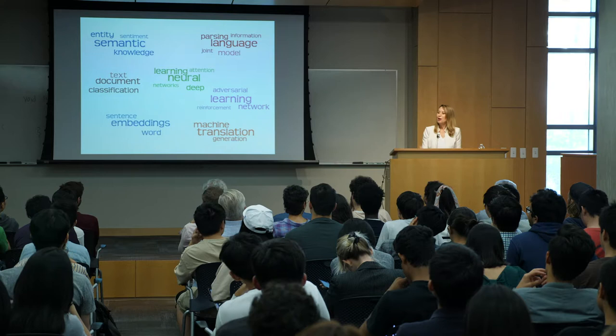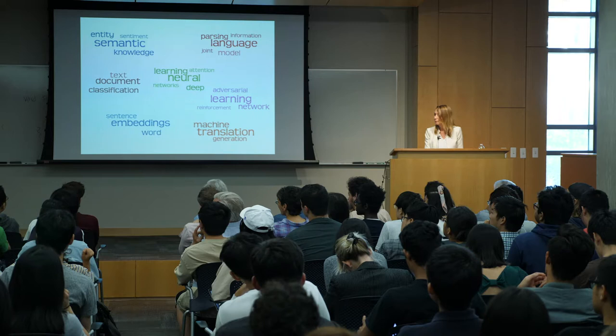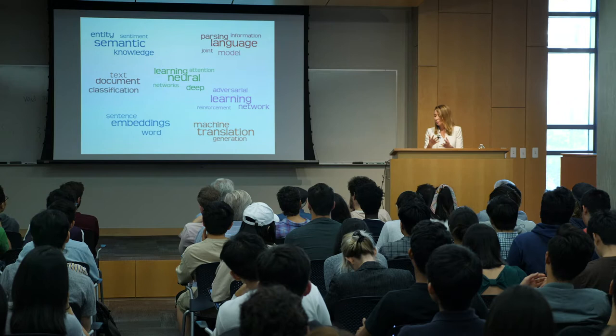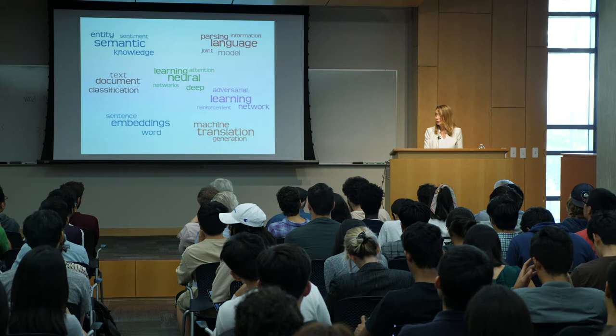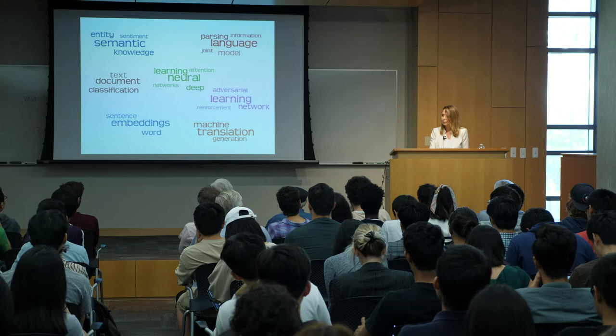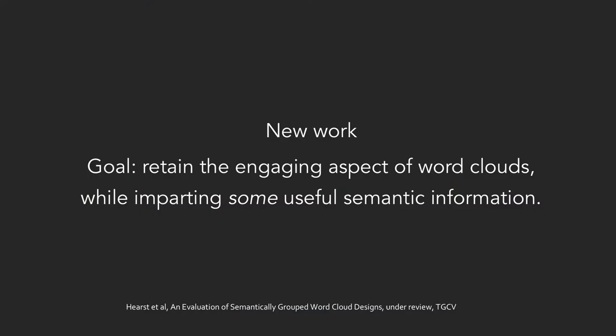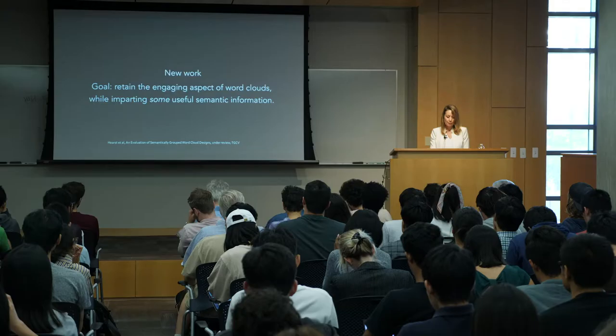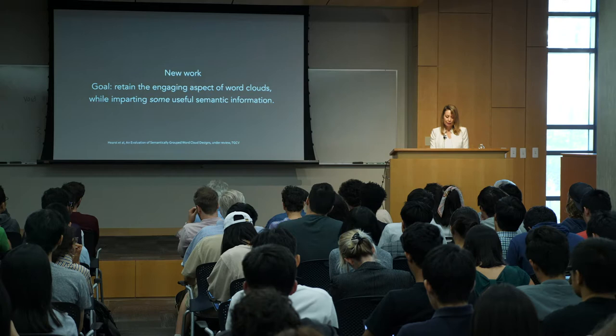What about phrases like 'machine learning'? Phrases can be much better — it is a hard problem in NLP about where exactly to cut them off. But if you hand-engineer them it can be much better. Word clouds often look a lot better if you use bigrams. Here is some new work where the goal is to retain the engaging aspect of word clouds — since if you can't beat them, join them — while imparting some useful semantic information, and getting rid of the assumption that size means anything, because people really do not process size in any depth except for really big ones getting noticed.